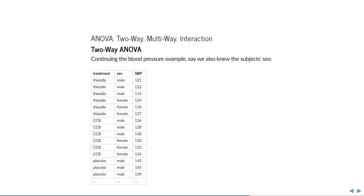As an example of two-way ANOVA, let's continue with the blood pressure data from parts 1 and 2. In this example, we wanted to compare the average systolic blood pressure of hypertension patients undergoing either of three treatments. But what if we also wanted to know whether the blood pressure differed between males and females? A two-way ANOVA can estimate both of these effects simultaneously.